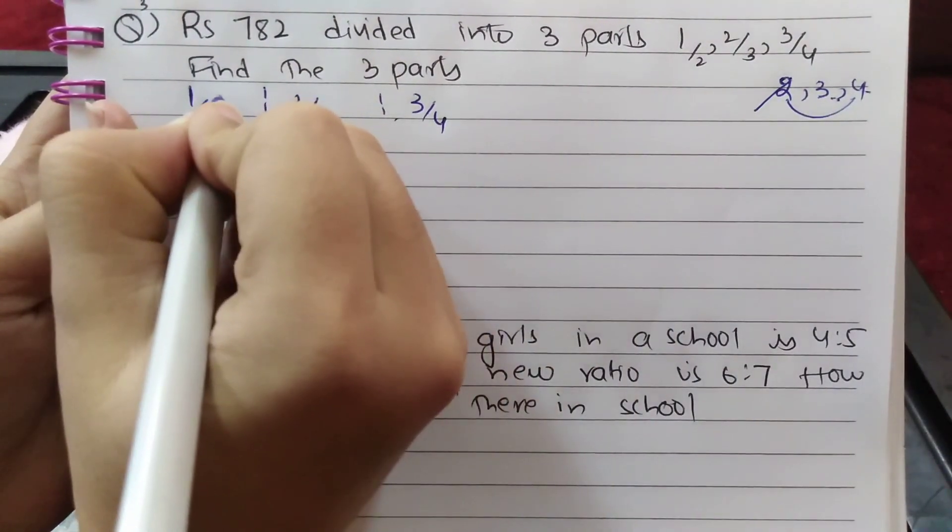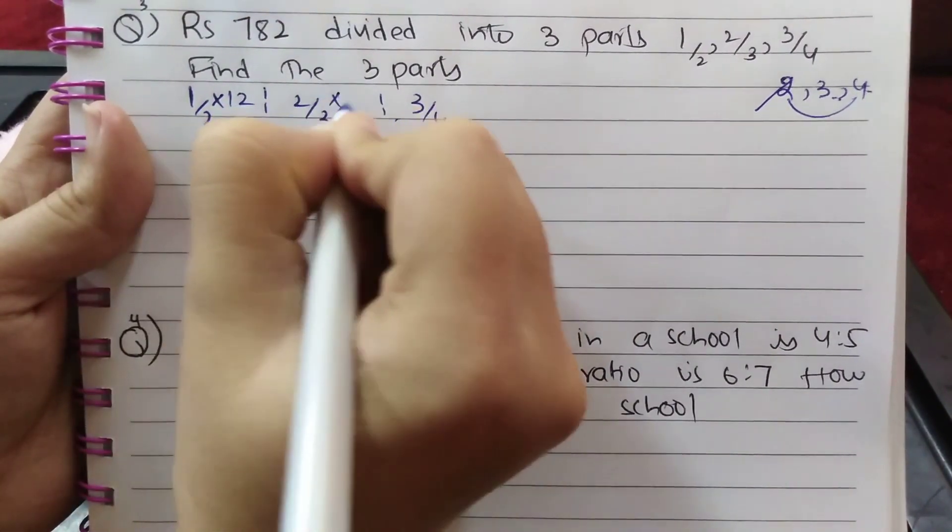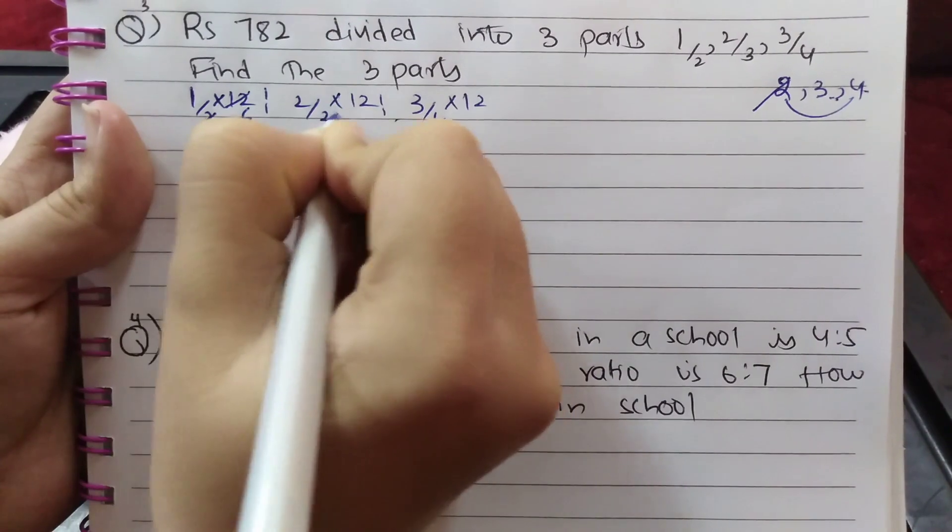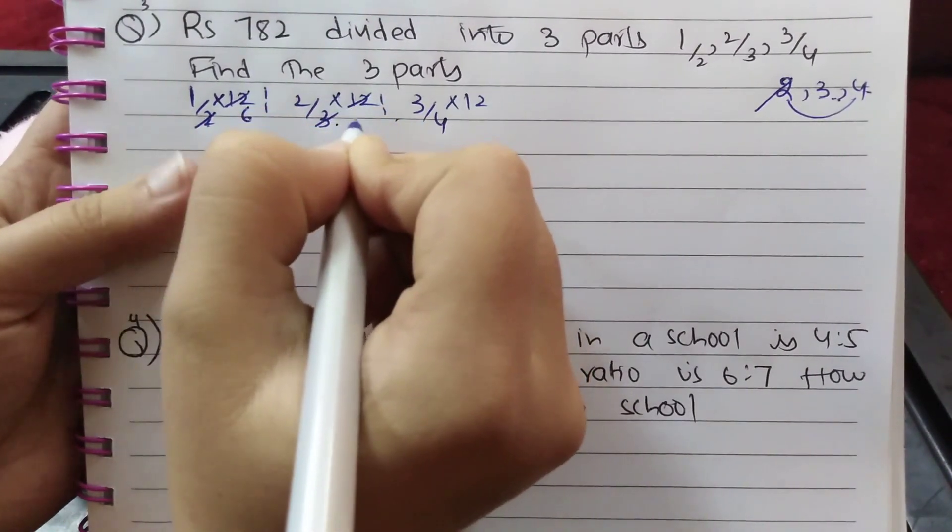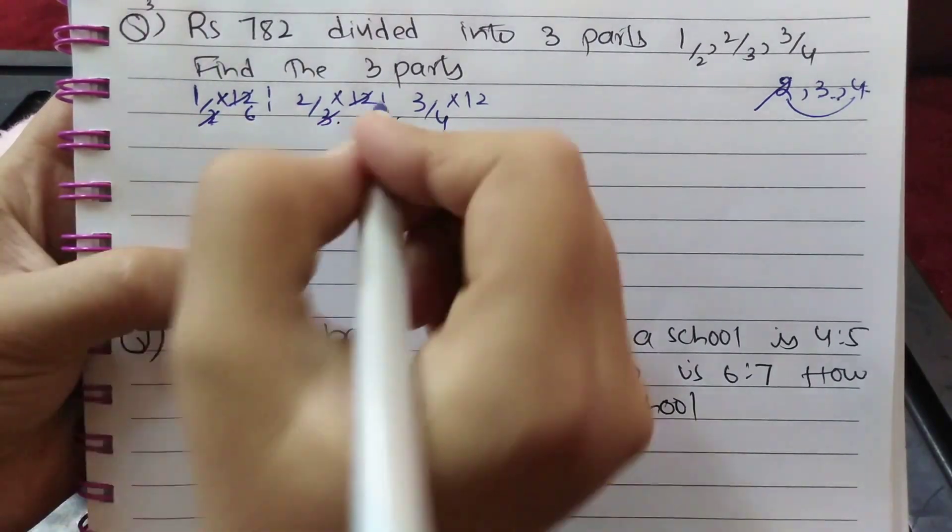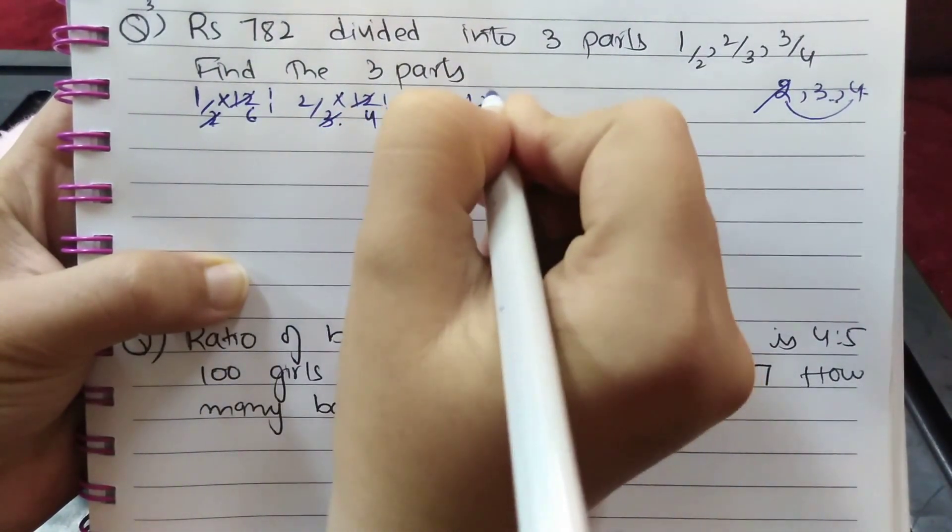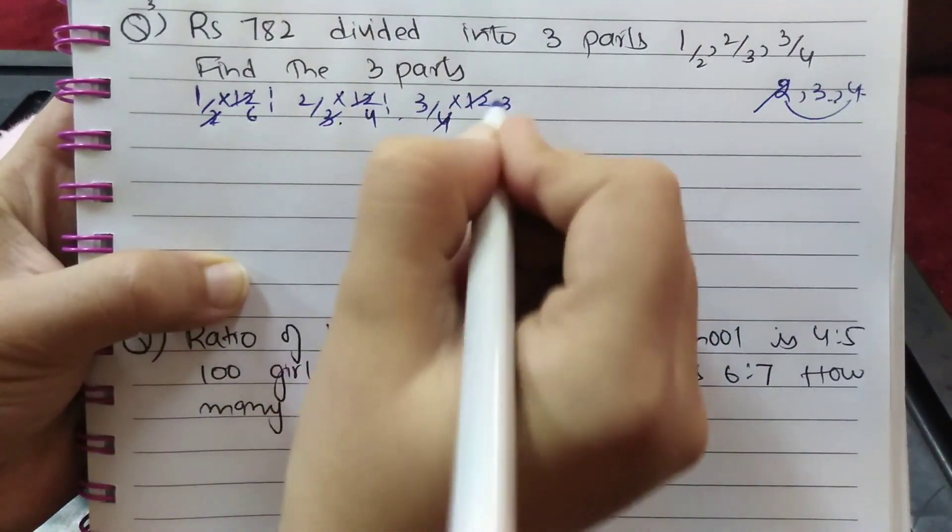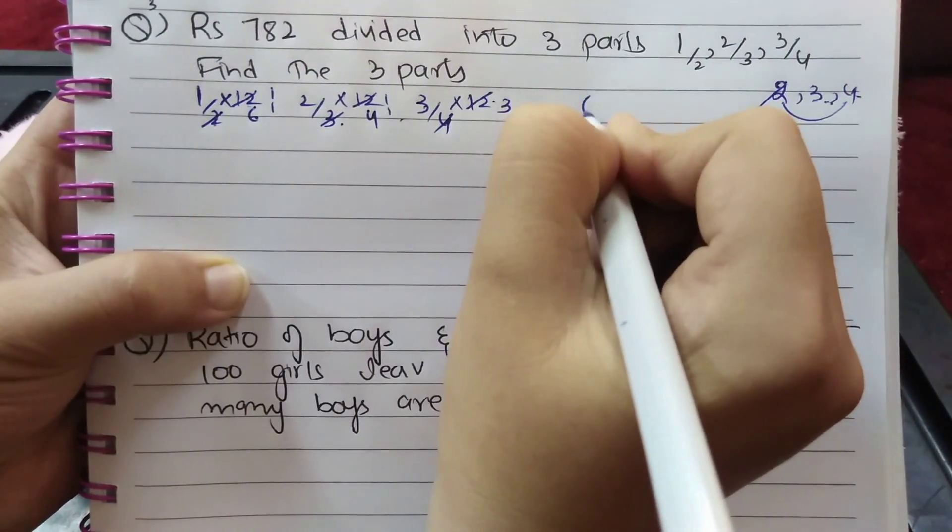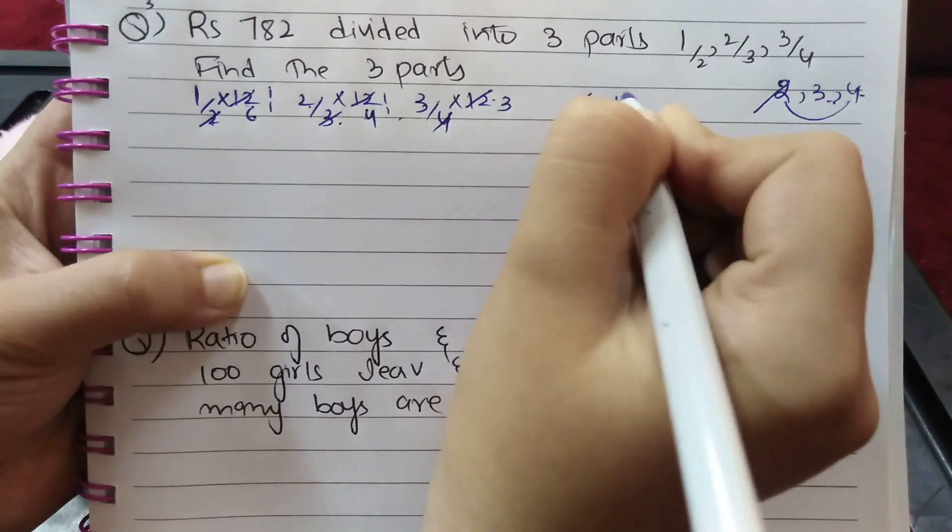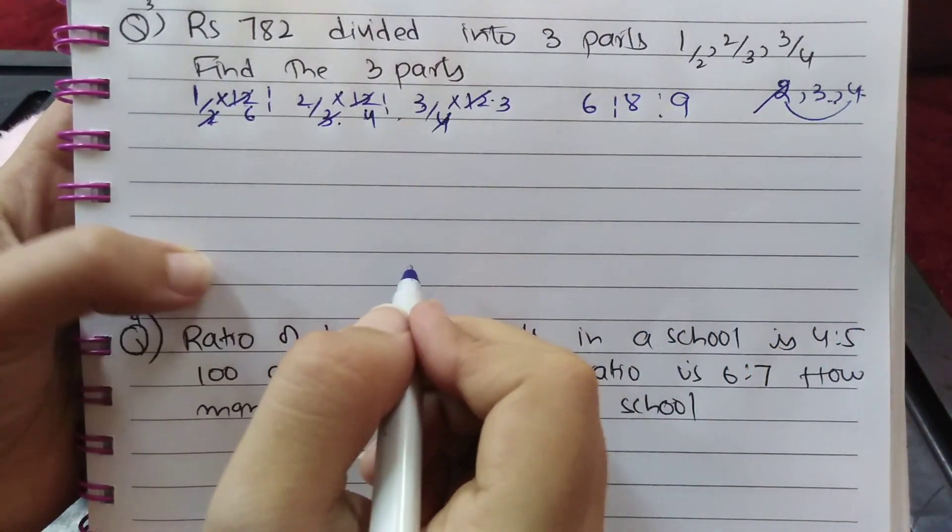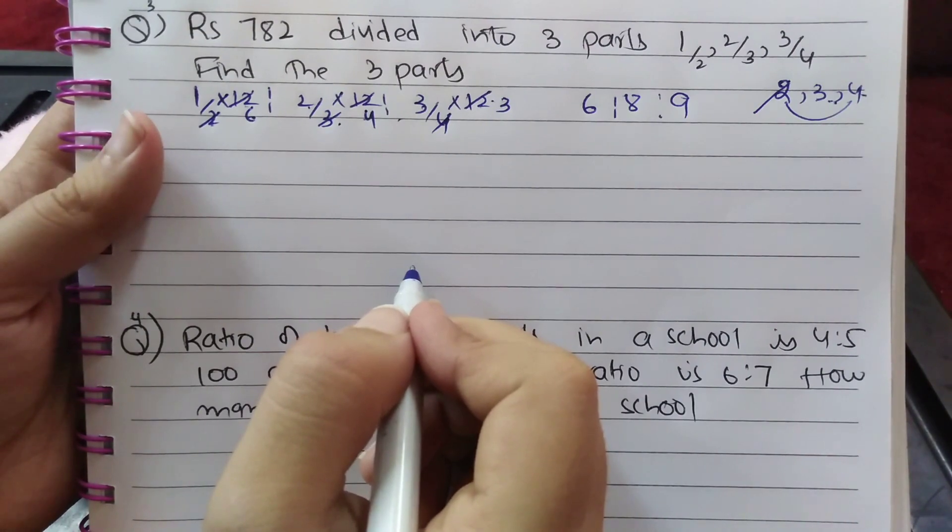Multiply all terms with 12. (½ × 12):(⅔ × 12):(¾ × 12) = 6:8:9. So the ratio of these is 6:8:9.